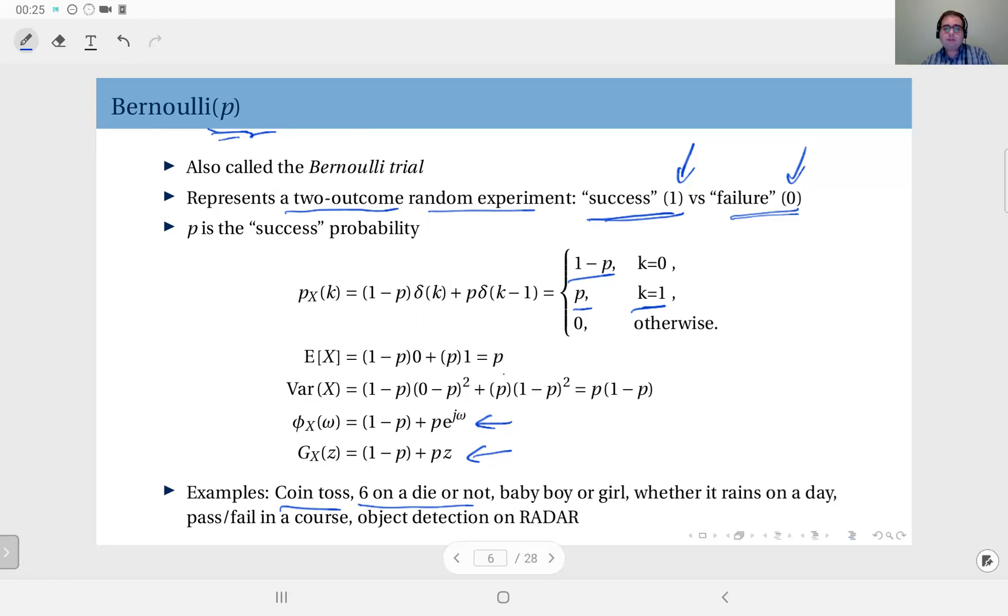But if you define the outcome of six as a success and the others as a failure, then you have a two-outcome random experiment in which the success probability is one over six. So this would give you a Bernoulli one over six random variable.